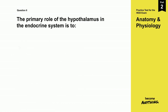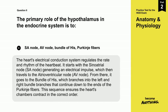The correct answer is C: SA node, AV node, bundle of His, Purkinje fibers. The heart's electrical conduction system regulates the rate and rhythm of the heartbeat. It starts with the sinoatrial node (SA node) generating an electrical impulse, which then travels to the atrioventricular node (AV node). From there, it goes to the bundle of His, which branches into the left and right bundle branches that continue down to the ends of the Purkinje fibers. This sequence ensures the heart's chambers contract in the correct order.